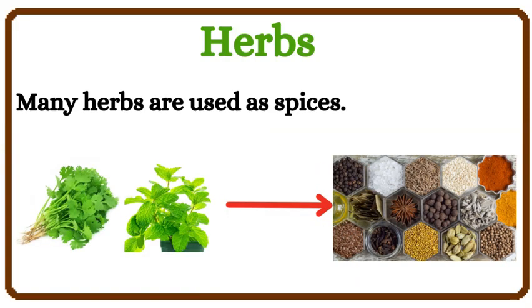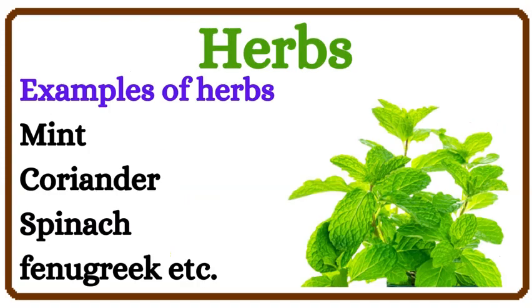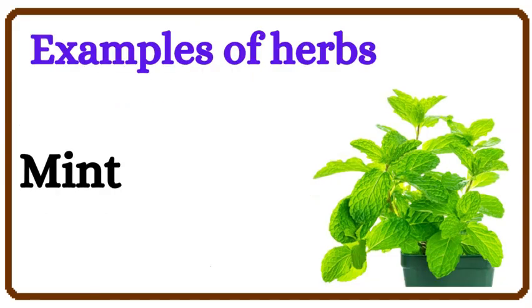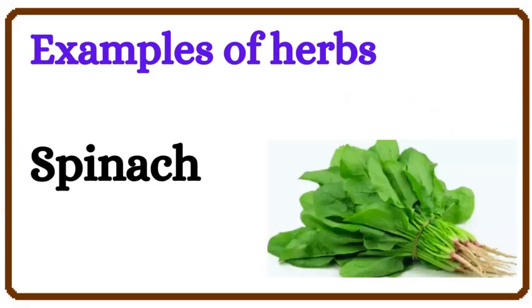They live for two to three months. Many herbs are used as spices. Some herbs are used as medicines. Examples of herbs: Mint, Coriander, Spinach.